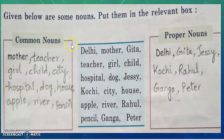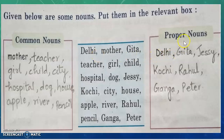Some nouns are given here. We have to identify whether the given noun is a common noun or a proper noun. First one is Delhi — Delhi is a name of a city, a particular city, it's the capital of India. So Delhi will come under proper noun. Mother is a common noun because we all have mothers.